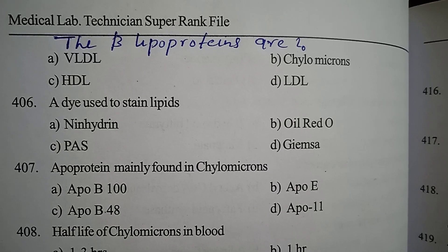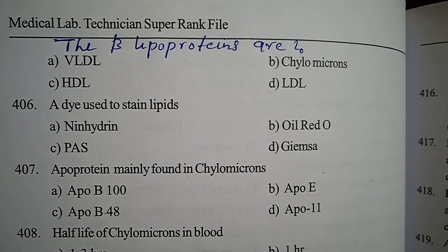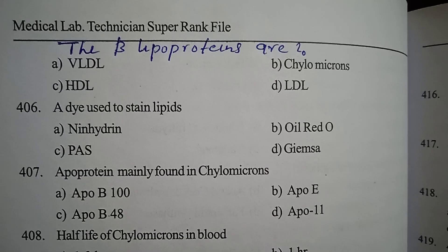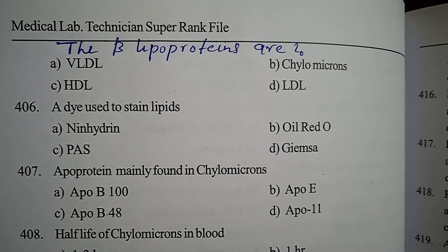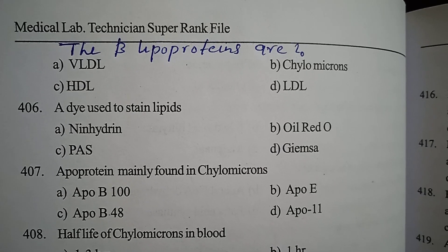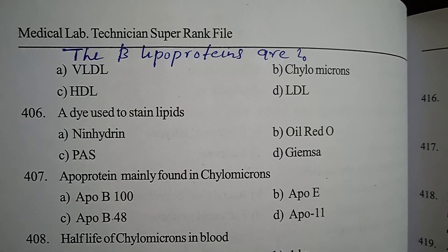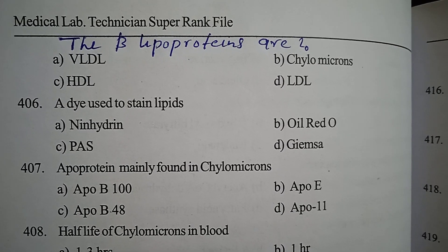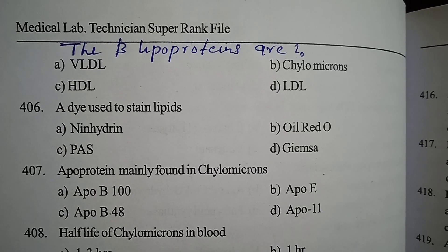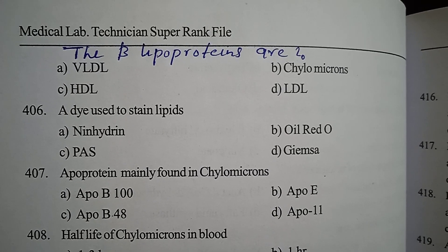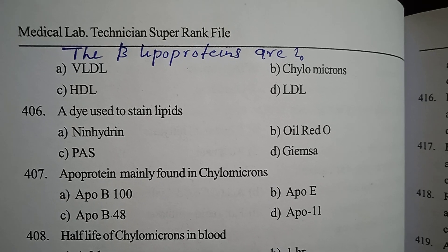First one: the beta lipoproteins are — option A VLDL, option B chylomicron, option C HDL, option D LDL. Correct answer: option D, LDL — low density lipoprotein, which is the beta lipoprotein.